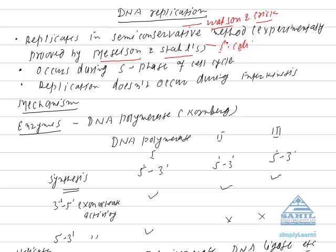It means two strands of DNA get separated during replication and each strand serves as a template for the formation of a new strand. So one strand of DNA is always old and the other strand is always new. This is called the semi-conservative method of DNA replication.